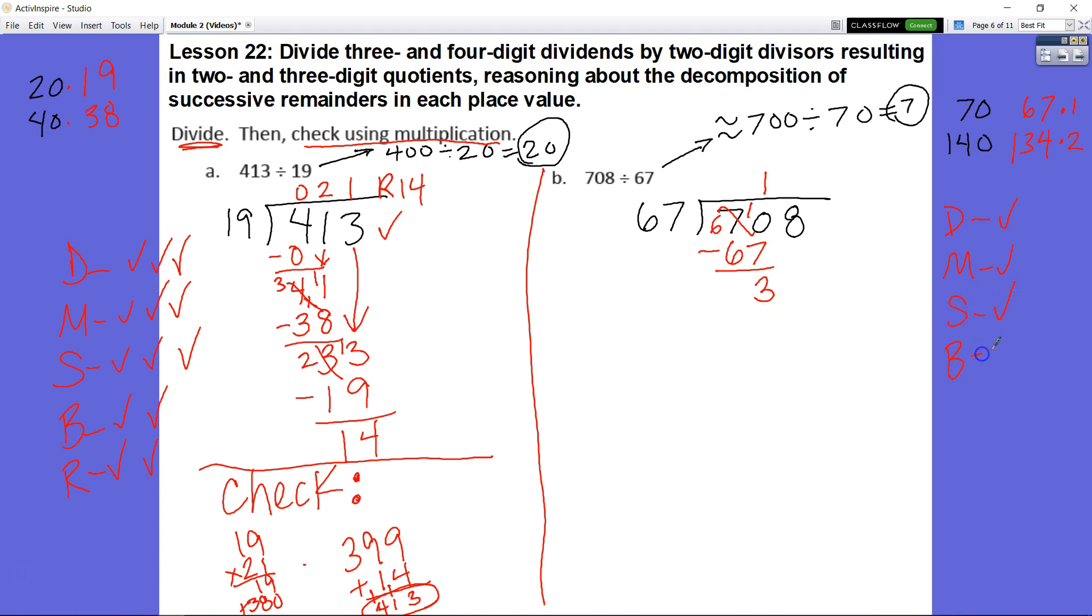Now I'm going to bring down my 8. Now I have 38 divided by 67. I cannot do that without regrouping. So that means I'm going to have a remainder. Multiply 0 times 67 and I get 0. Subtract. I have a remainder of 38. Remember this 0 has to be in the ones place. If you don't put that 0 in the ones place, it's not going to be correct.